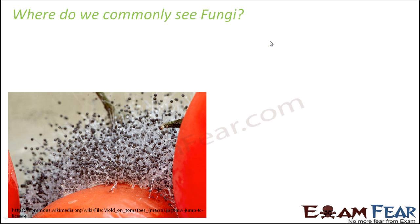Have you ever seen a rotten tomato? If you keep a tomato outside the refrigerator for a couple of days — maybe 10 to 15 days — gradually the tomato will go from slightly greenish to red as it ripens, then it will start becoming soft, and then it will start to decay and rot. What actually happens is, if you use a microscope and look very closely, you will see organisms that have developed on the rotten tomato, and those organisms are nothing but fungi.